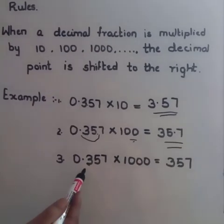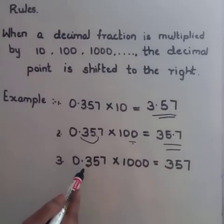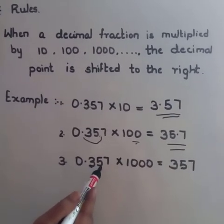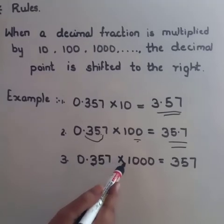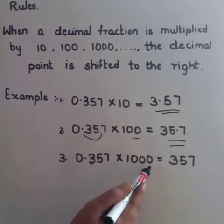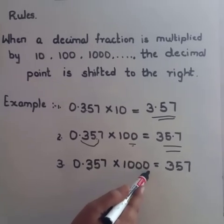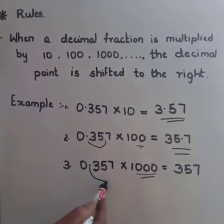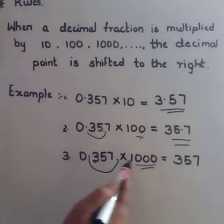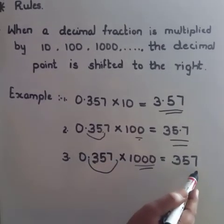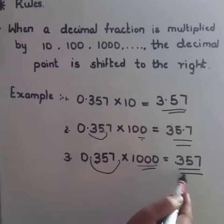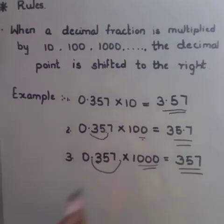In the same way, 0.357 × 1000 — how many zeros are there? Three. So we shift the point three places to the right, and the answer is 357.